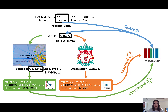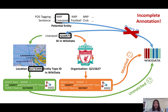However, this matching procedure suffers from two challenges. One challenge is the noisy annotation issue, where the same entity can be mapped to multiple entity types in the knowledge base. Another is the incomplete annotation issue, which is caused by the limited coverage of the knowledge base. Both issues result in high false positive rates in the distance labels.